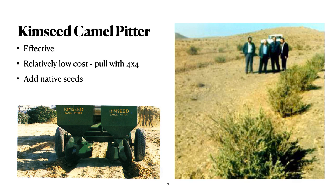One of the low-cost options is the Kimseed Camel Pitter, so-called because it could be pulled behind a camel. It's effective, relatively low cost, and usually pulled with a 4x4 vehicle. It has seed boxes on the back which can be set up to drop native seeds or introduced seeds into the pitted areas to grow plants. And you can see what kind of success is possible under the rainfall conditions that might be encountered.